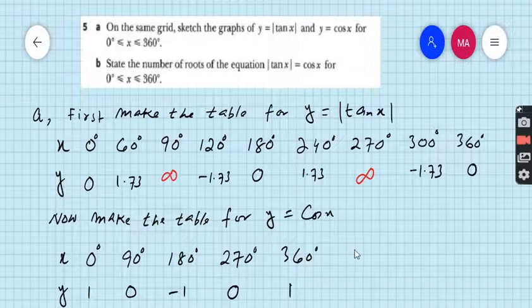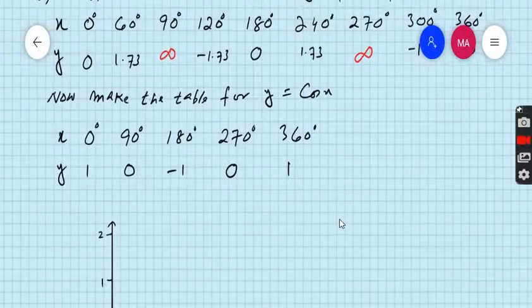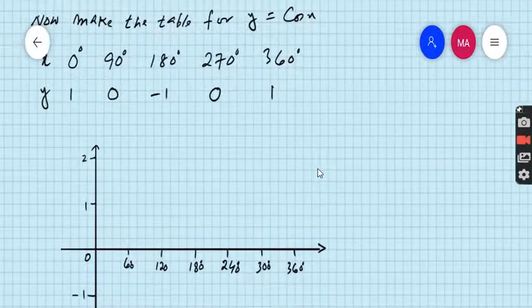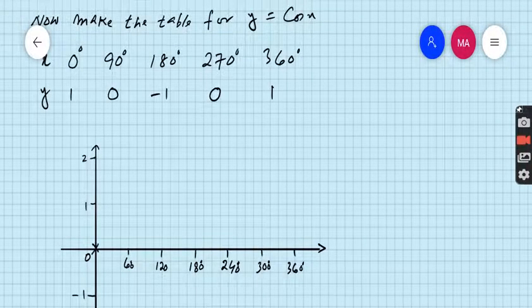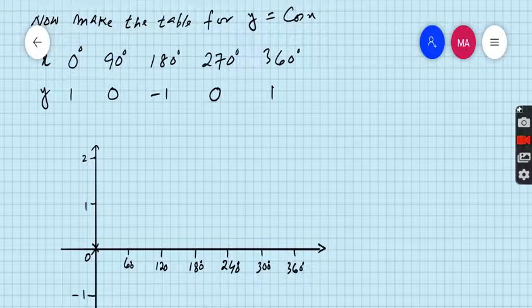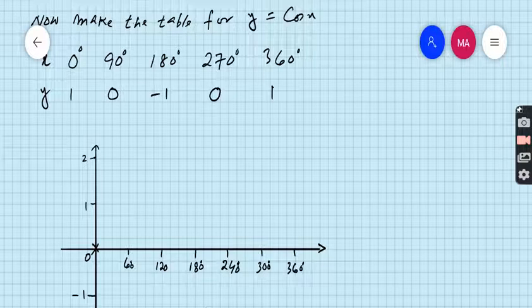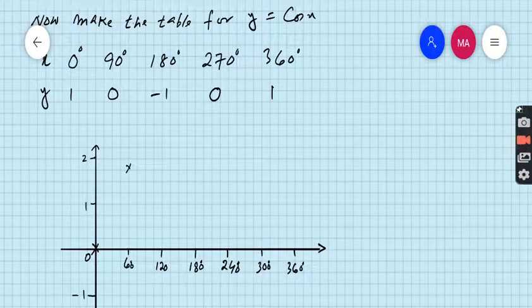So first we have to sketch this graph. At 0 the value is 0. At 60 the value is 1.73. So this is 1, this is 1.5 and this is 1.73. Second point.